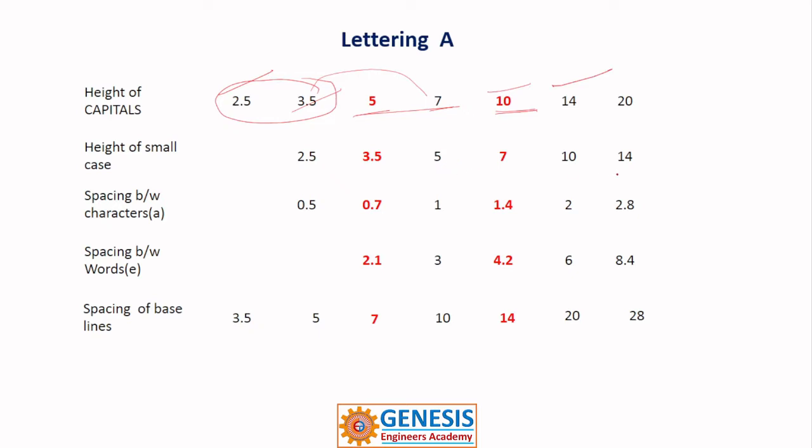You have to remember one thing that we are not going to use small case letters in drawing sheets, so you learn about capitals. Next you have to follow the spacing between characters A, B, C. The space between A and B, how much it should be. If it is 3.5, the minimum space is 0.5. But the maintenance must be constant, that is if you left 0.5 between two characters, the same must be maintained throughout your text.